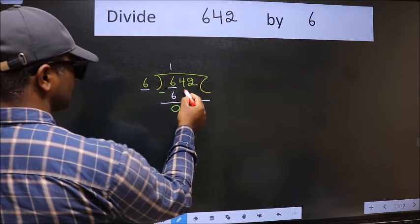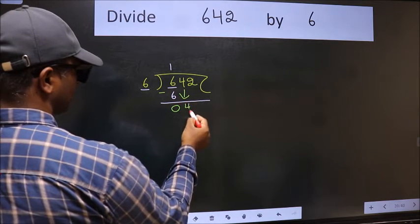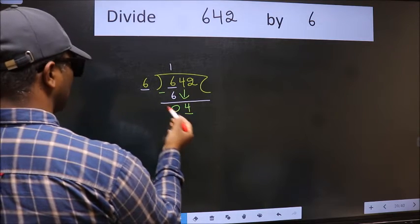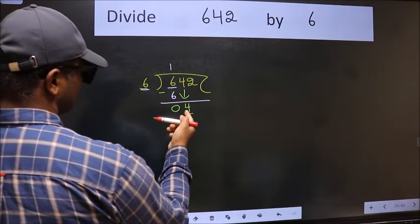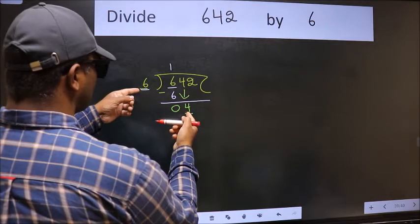After this, bring down the beside number. So 4 down. Now here we have 4 and 6 here. 4 is smaller than 6.